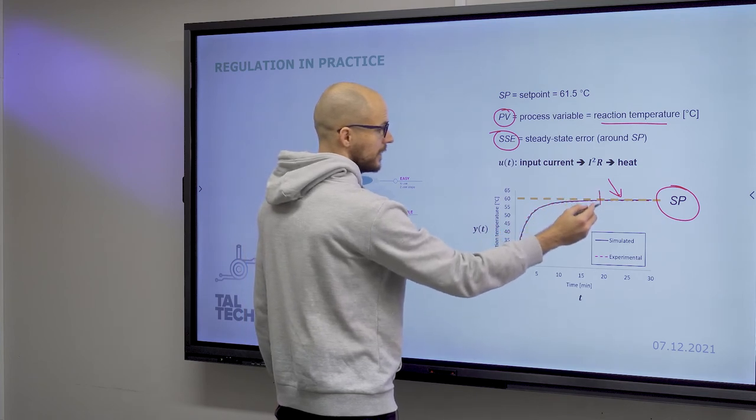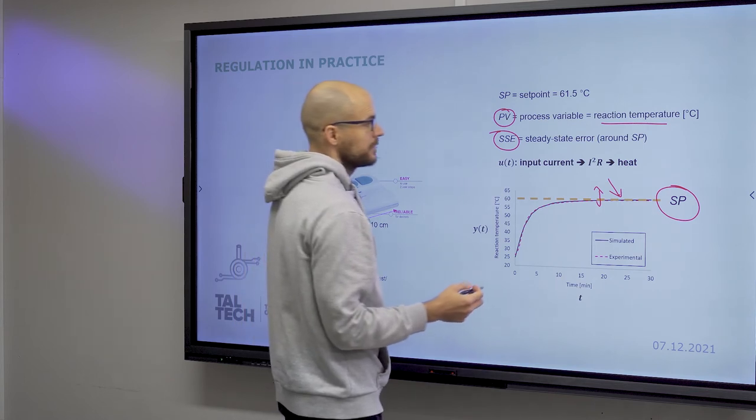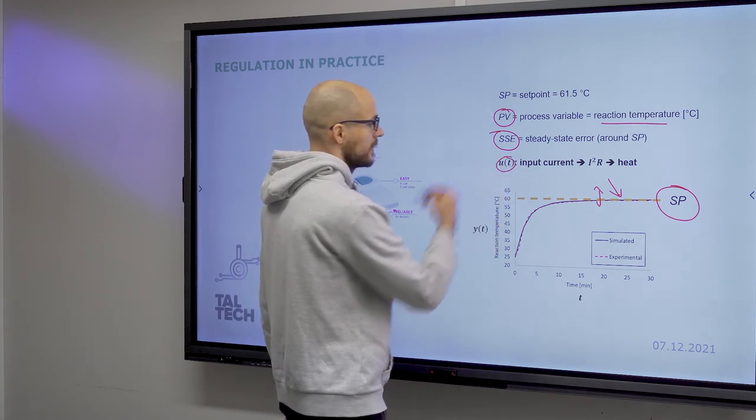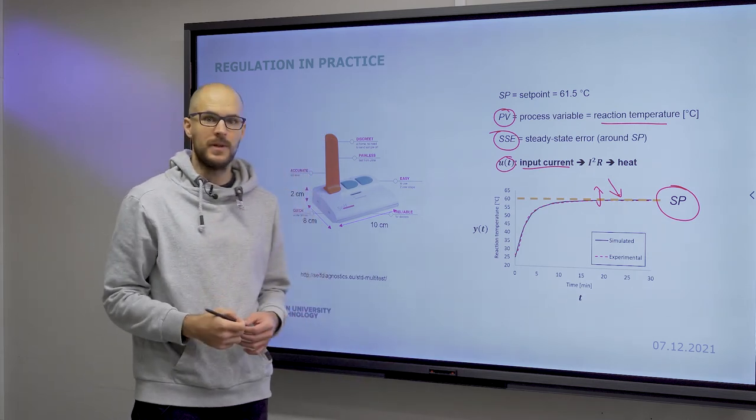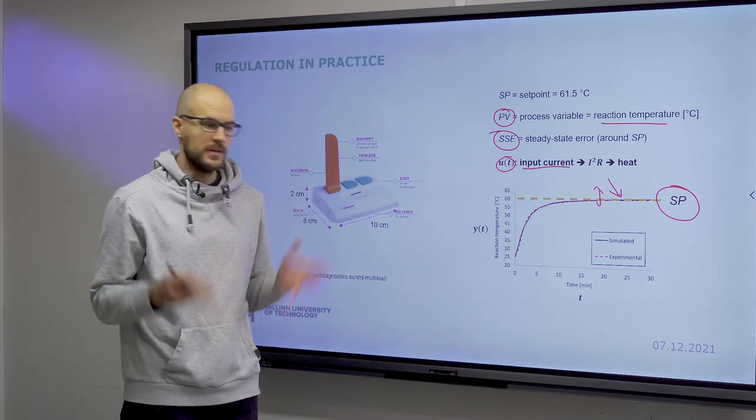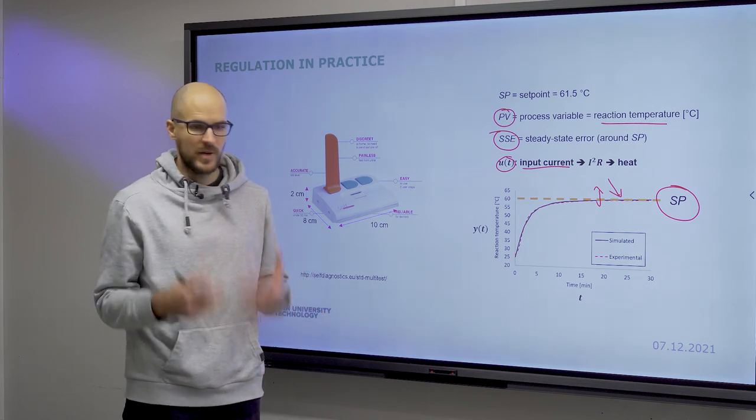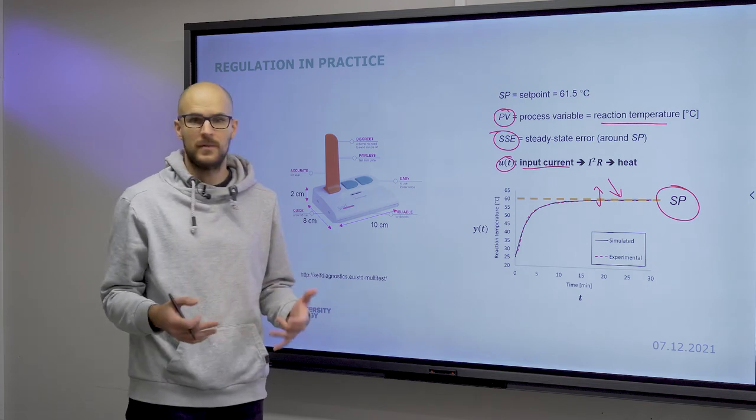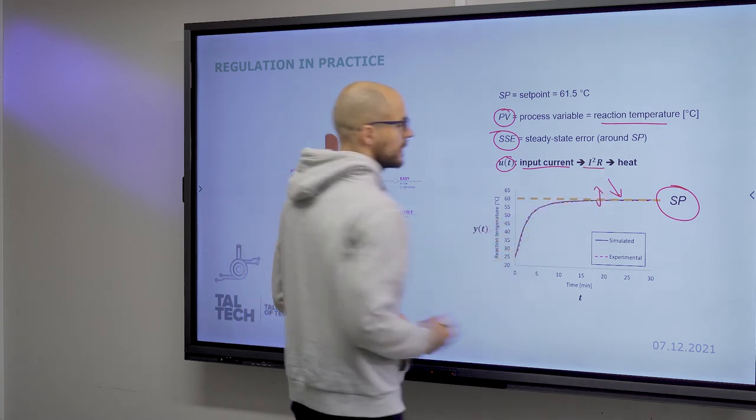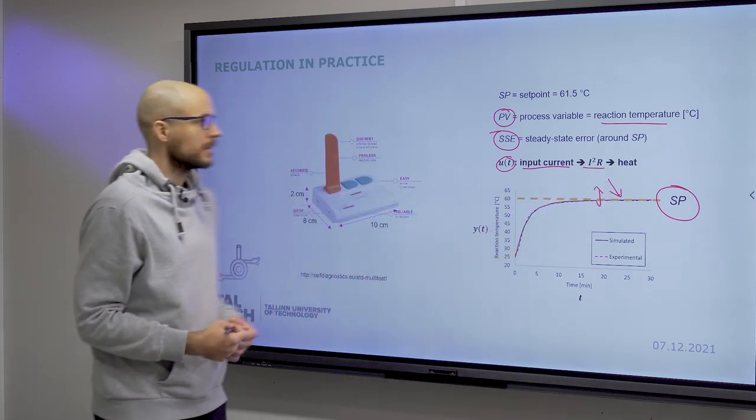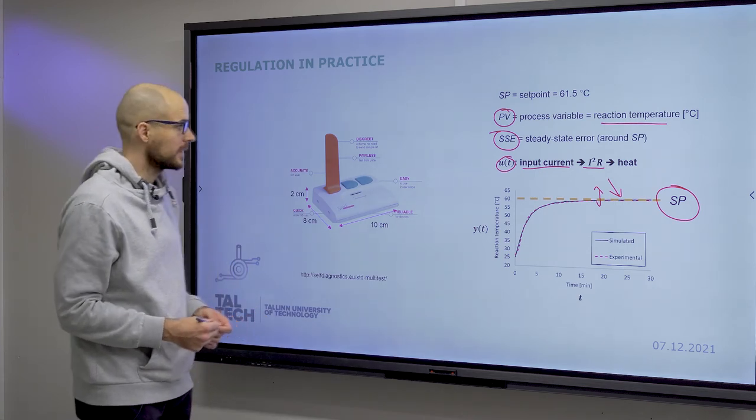SSE being steady state error, which is the deviation from your setpoint over time. And the input being current in this case, because we do Joule heating. So in any conductor, if we pass through a current, then by means of electrical resistance, you generate heat. And the amount is square of the input current times the resistance. That's the heating power that you get.